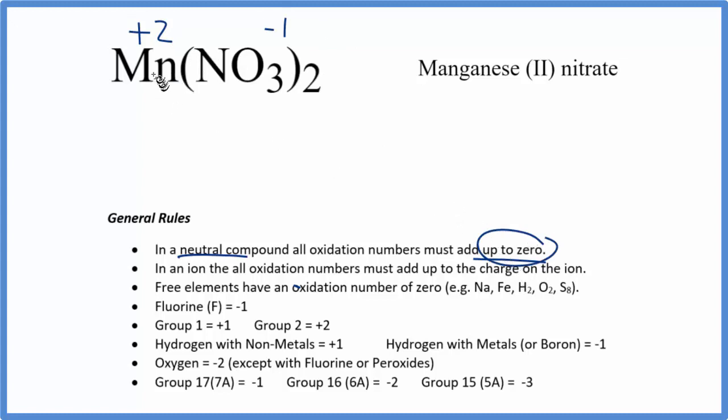So that's how you find the oxidation number on the manganese in Mn(NO3)2, manganese 2 nitrate. If you want to find the oxidation numbers for each of these elements, there's a card up here to help you find the oxidation numbers for each element in the nitrate ion.